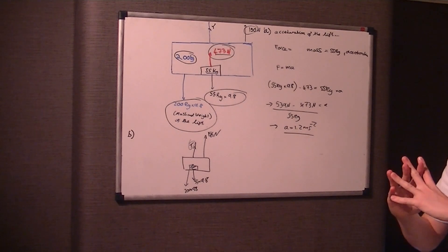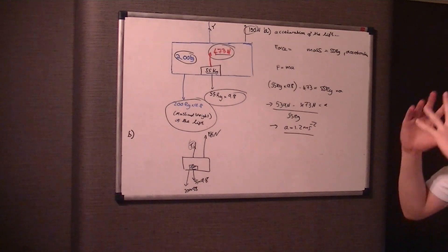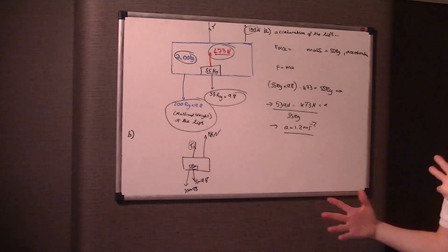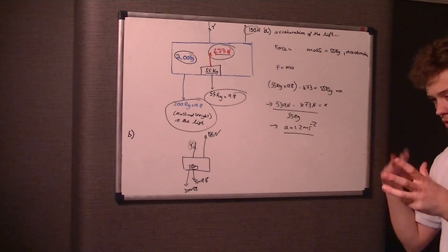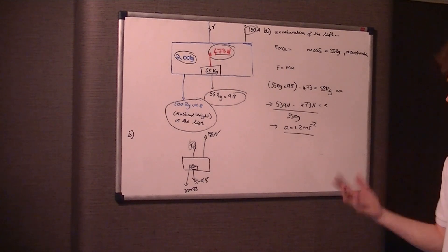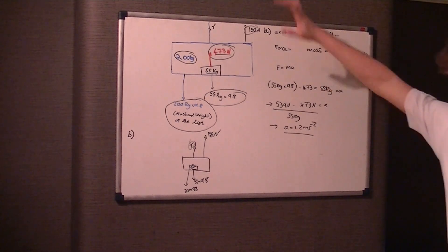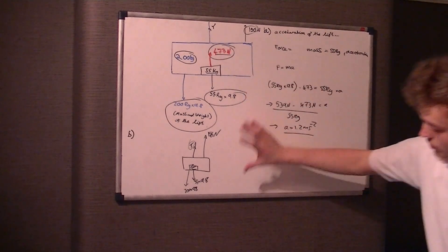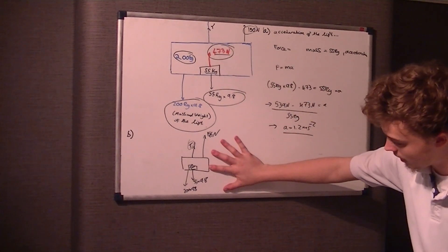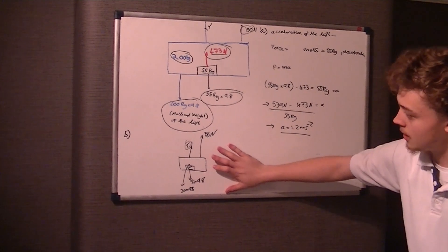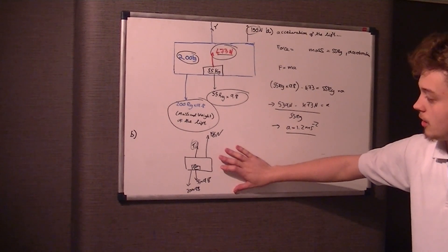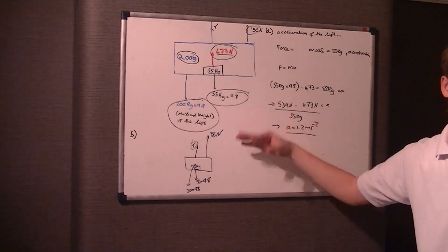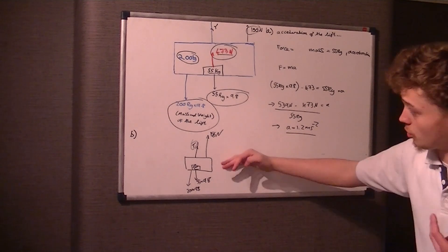We've worked out the acceleration, we know the total mass, and we're working out the force. So obviously force equals mass times acceleration. That's why if you were trying to work out the acceleration in the first part, you couldn't use the whole system because you didn't know what T was.